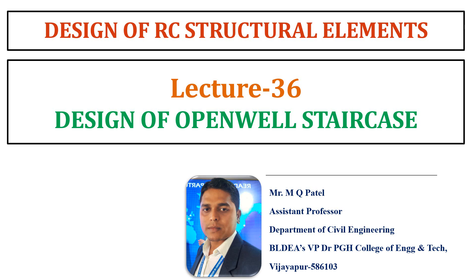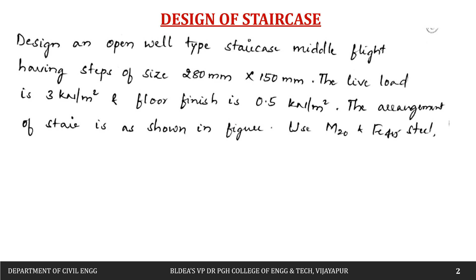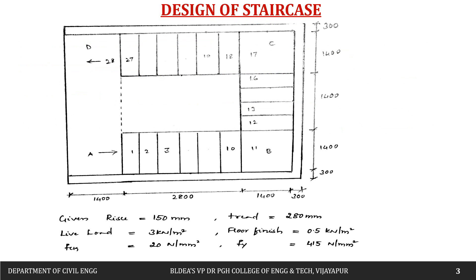Hello everyone. In this video we are going to study the design of an open well staircase. In the previous video we saw the design of a dog-legged staircase. The problem states: design an open well staircase with a middle flight having steps of size 280 mm by 150 mm, live load of 3 kN/m², floor finish of 0.5 kN/m², using M20 concrete and Fe415 steel.